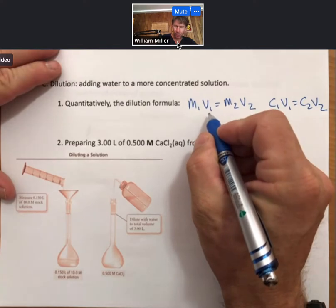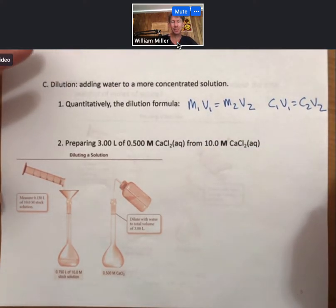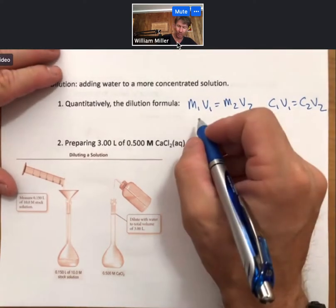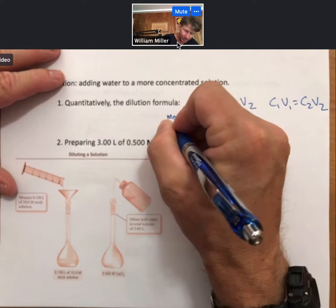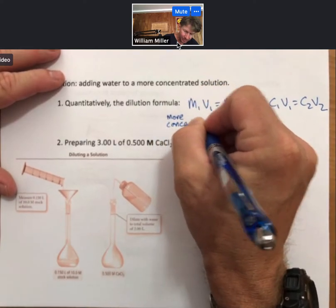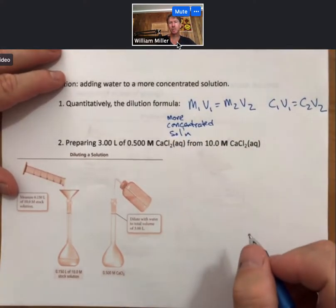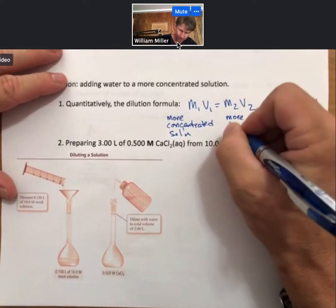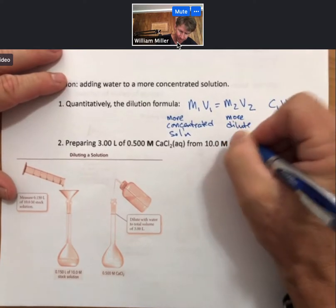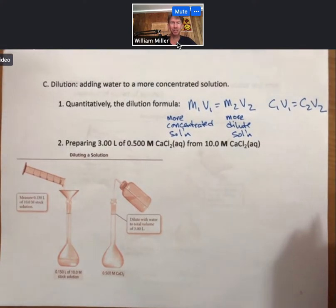For the subscripts one, the way that I like to keep things simple for me and keep track of things, is that the ones stand for the more concentrated solution, while the twos stand for the more dilute solution. Not that the math cares. You can do it either way, but that helps me keep it organized.